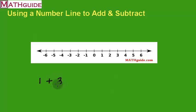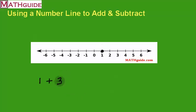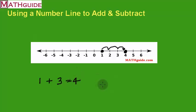If I take a very simple problem like one plus three — even though we know the answer — physically we start at number one and go three units. Since three is a positive number, we move three spaces to the right. My answer is four, and it works. Intuitively, we knew that was the answer anyway.